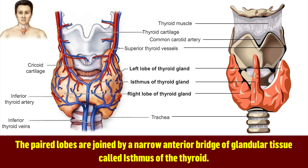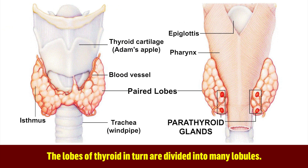The paired lobes are joined by a narrow anterior bridge of glandular tissue called the isthmus of the thyroid. The lobes of the thyroid in turn are divided into many lobules.